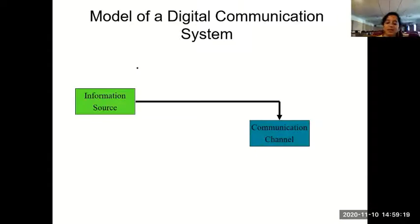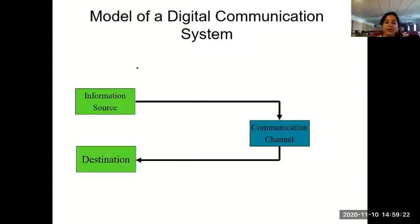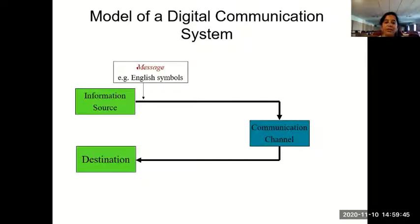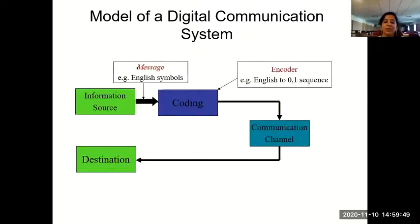This information is given through a communication channel, and once it passes through the channel, it should reach the destination. The source of information can be in one city and the destination in another — we can communicate from one part to another part of the world using a digital communication system. This is a basic model, and we'll try to add a few blocks to make it much more efficient.